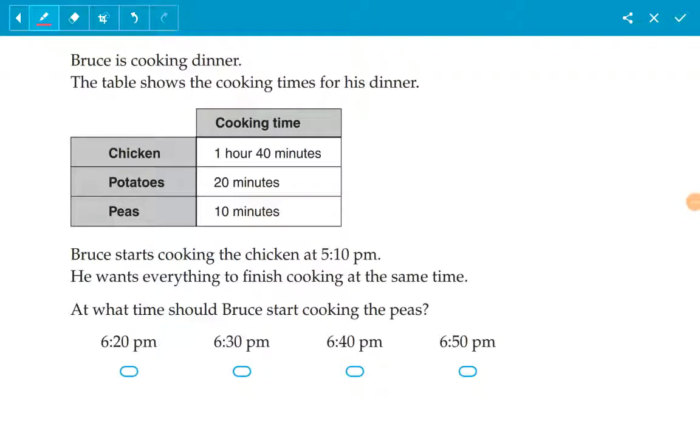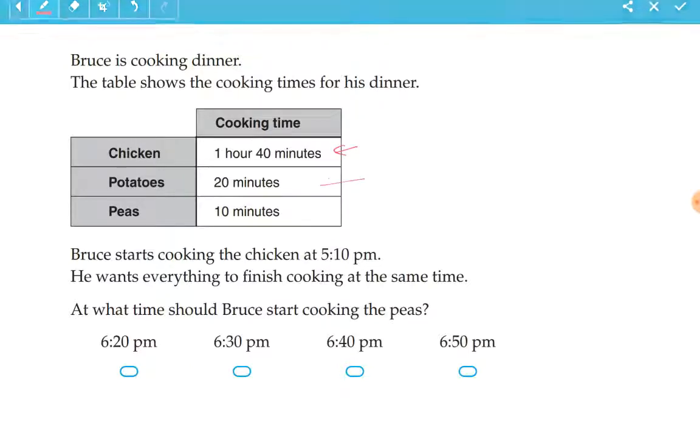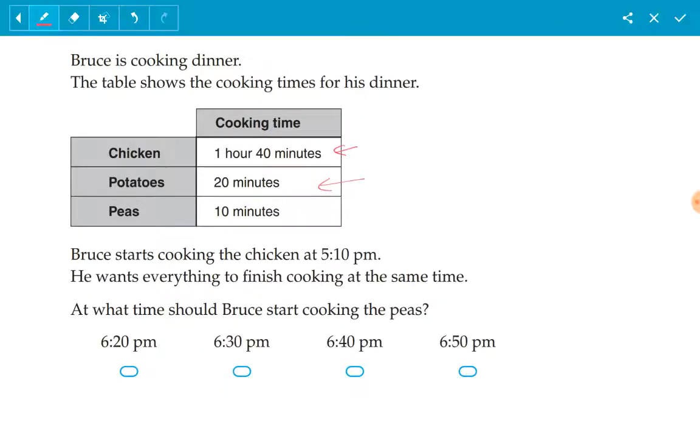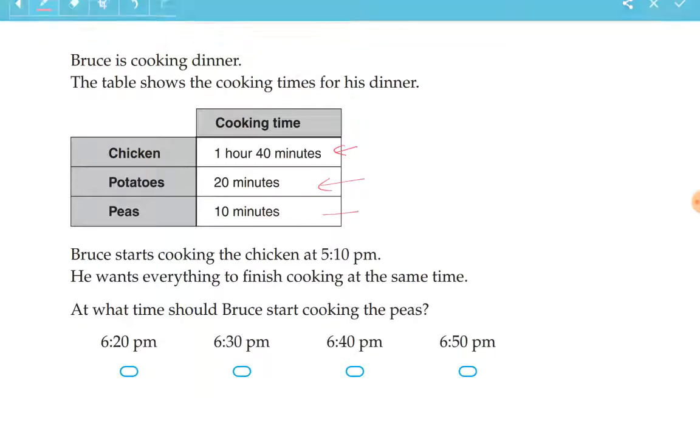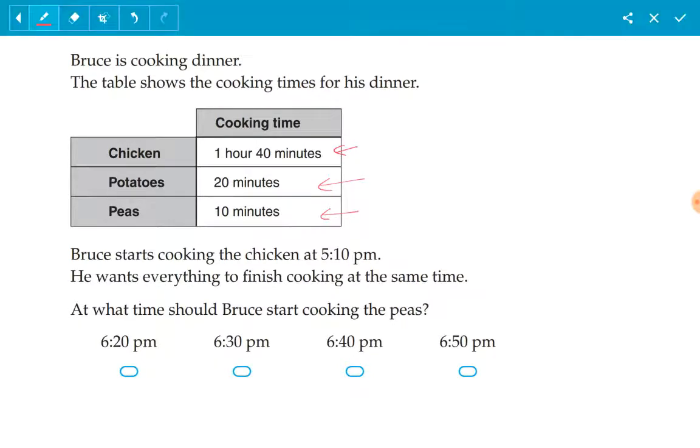Bruce is cooking dinner. The table shows cooking times for his dinner. He cooked chicken which took 1 hour 40 minutes, potatoes which took 20 minutes, and peas which took 10 minutes.